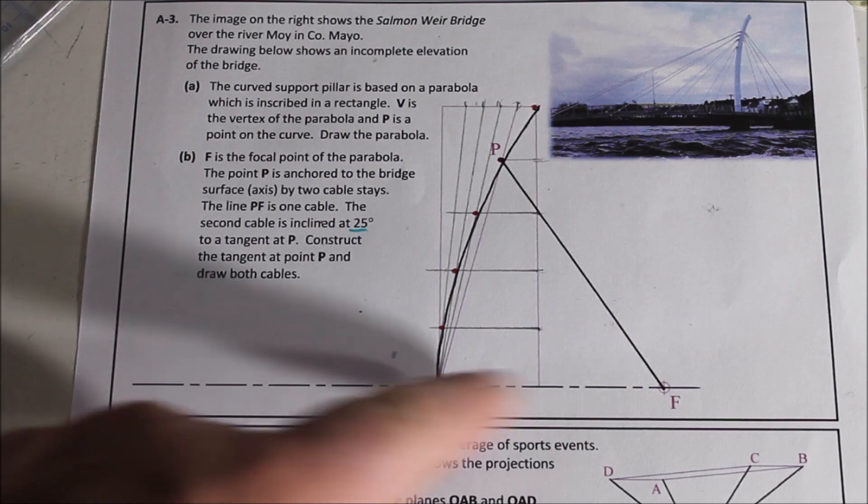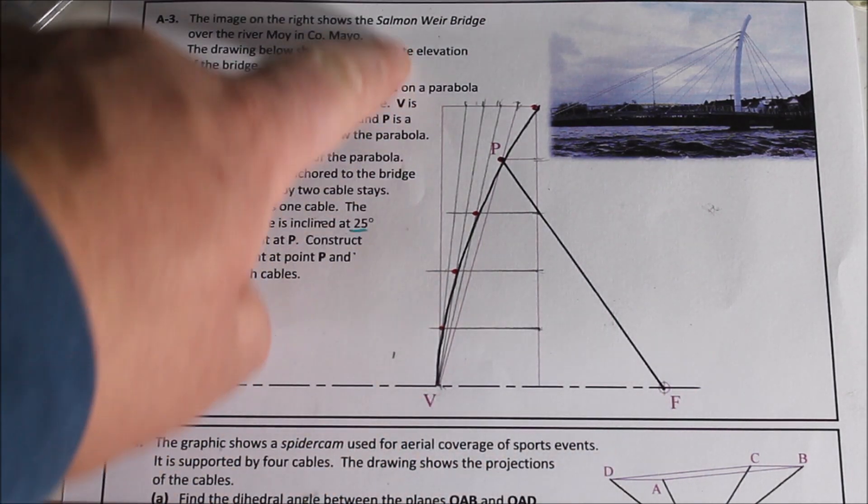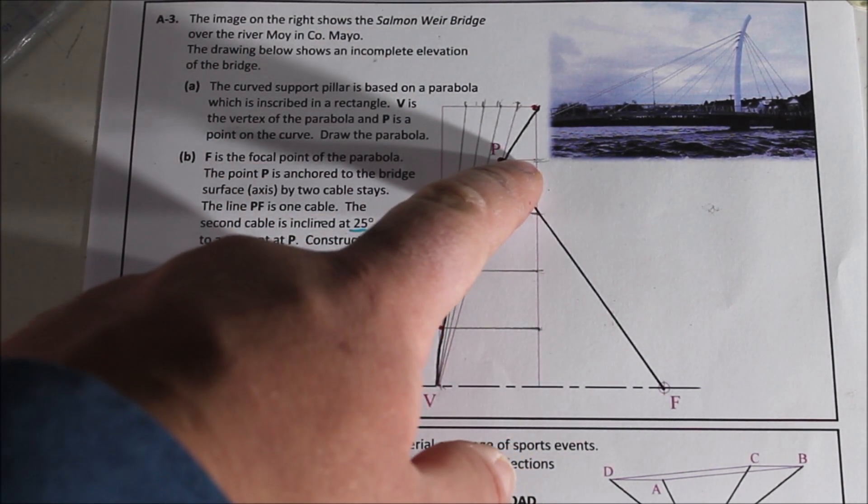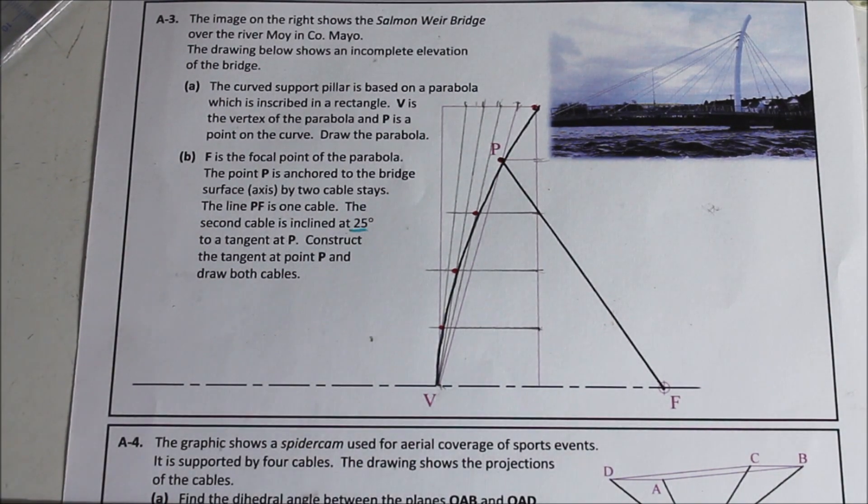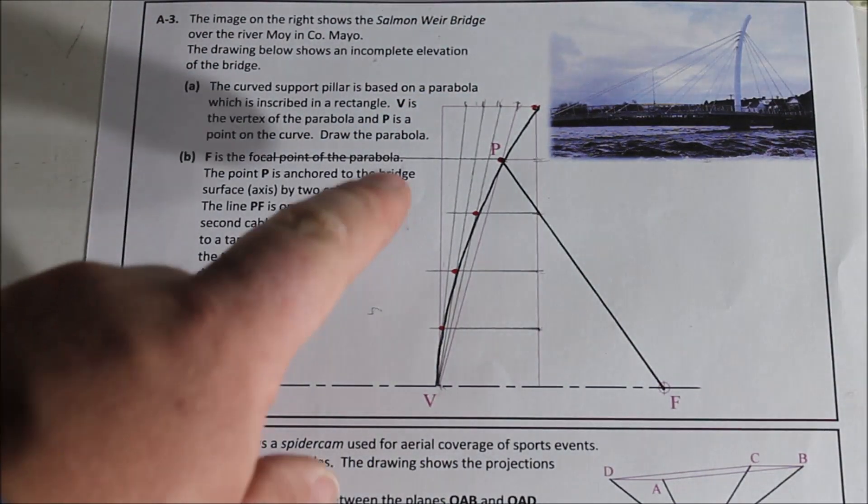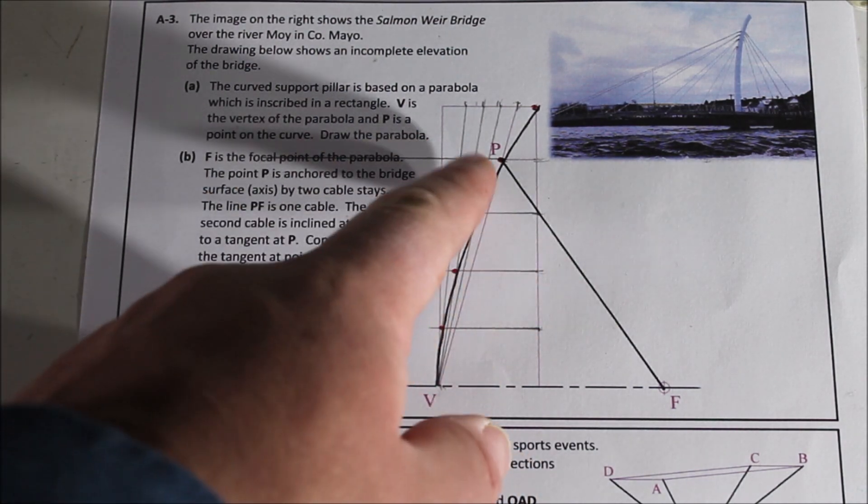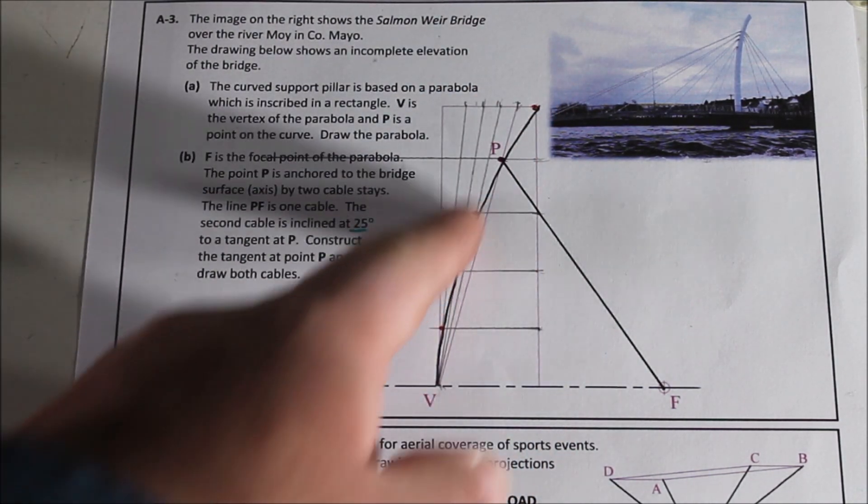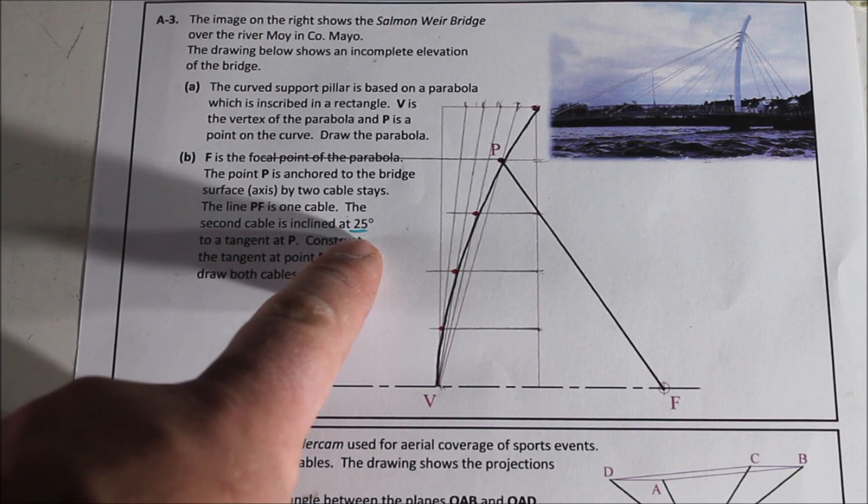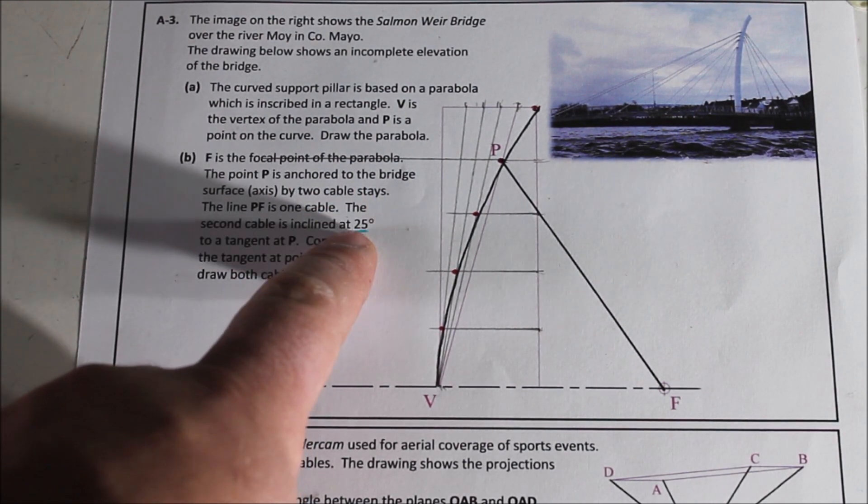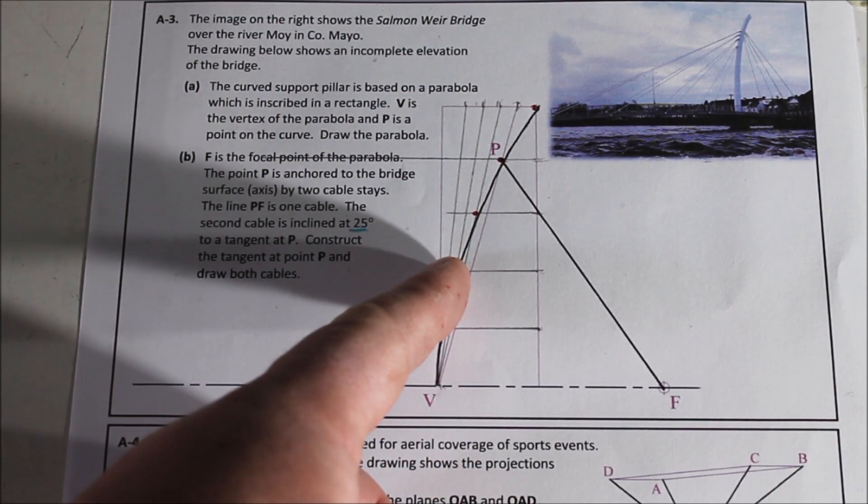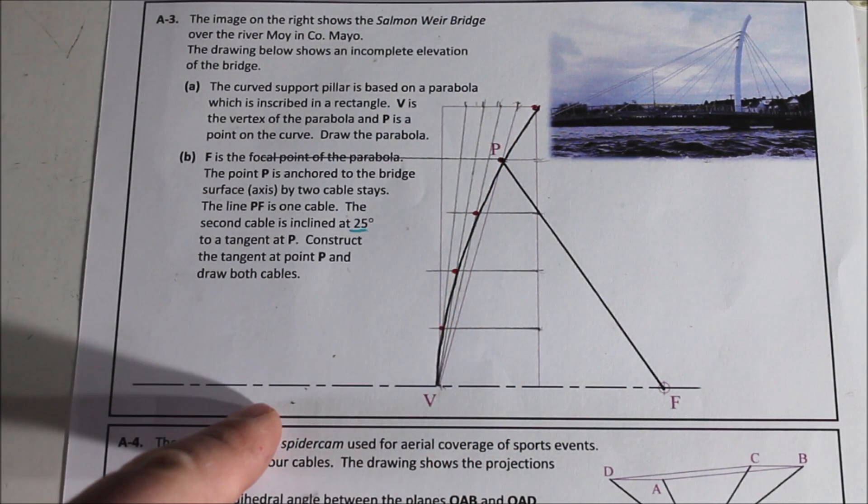In this case our axis is parallel or is horizontal here so the directrix would be vertical. So we're just going to draw a line horizontally across from P. Once that is done we bisect this angle and by bisecting that angle will give you your tangent. Then after that if highlighted here the stay is 25 degrees. Inclined 25 degrees to that tangent. So then from that tangent we'll go 25 degrees and that'll be our second cable.